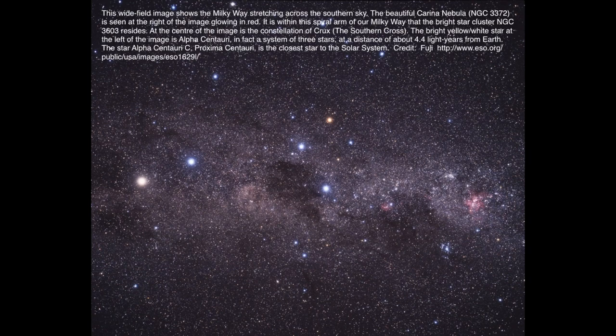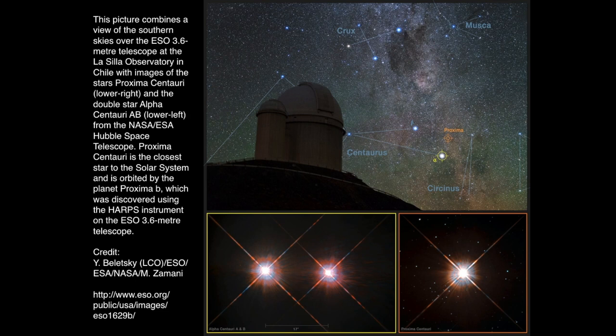Here is a view of the southern sky taken by the group looking for a planet around Proxima Centauri. We see the Carina Nebula in the middle, the Southern Cross, and on the left the yellow star Alpha Centauri C — very close. Alpha Centauri itself is the bright yellow-white star, a system of stars, the same color as the Sun — a G-type star. This image was taken by Beletsky and the team that hunted for Proxima b.